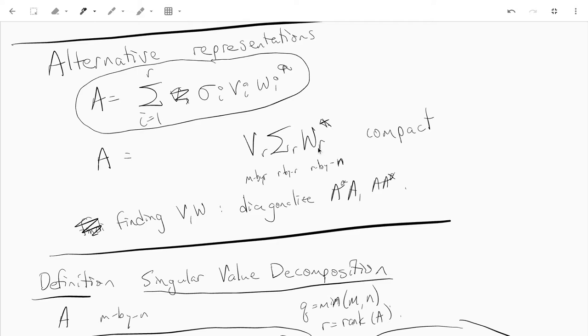We call this a compact singular value decomposition or factorization because if R is small, we only need, this is only R columns in each of these matrices. So imagine that A is 100 by 100, but only has rank 3, then we're factorizing A in terms of a 100 by 3 matrix times a 3 by 3 times a 3 by 100 matrix.